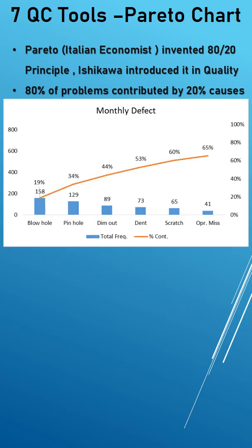You can see on the example of Pareto chart, the left side column denotes the frequency and the right side column denotes the percentage of contribution. You can see only 6 defects among total mandatory defects, that itself contributes to 65% of total rejections.